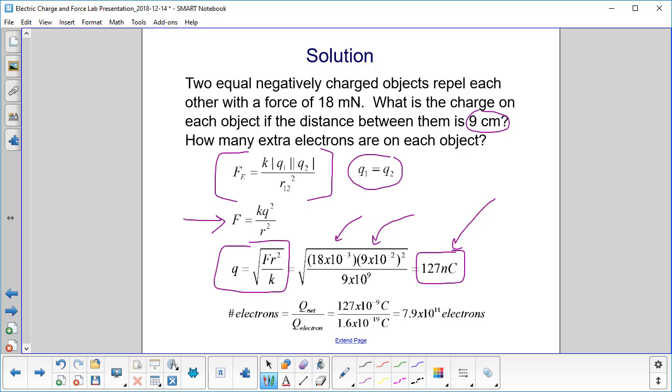So we take 127 times 10 to the minus 9th coulombs, divide it by the charge on the electron, which is on your formula sheets, 1.6 times 10 to the minus 19th coulombs, and you get 7.9 times 10 to the 11th electrons.